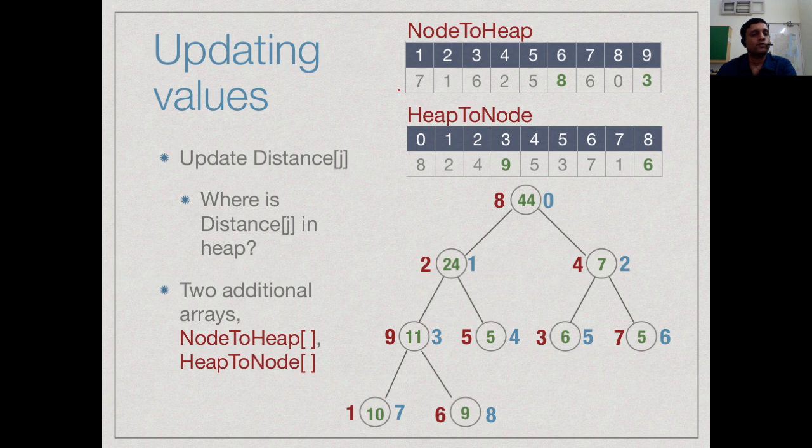Unless I do this, I cannot really use this for Dijkstra's algorithm because Dijkstra's algorithm will ask us to update a value in the heap, but I need to know which value in the heap I need to update. The update can be done using this upward or downward manipulation exactly like insert or delete max, but the real problem is identifying where the update starts.